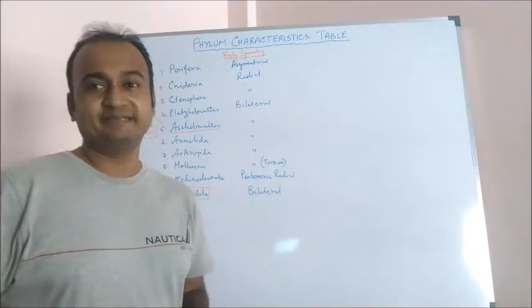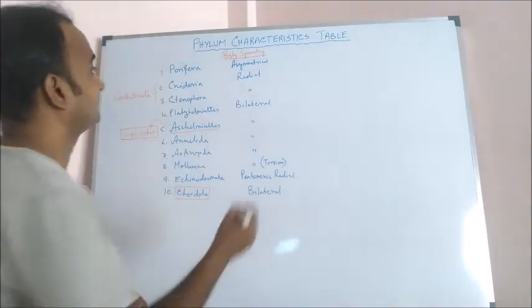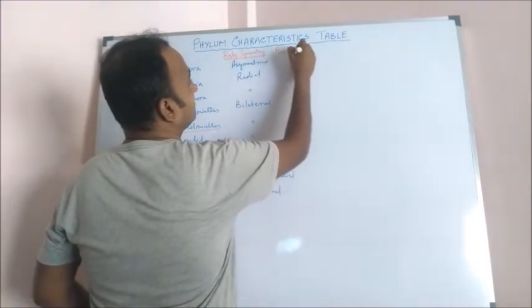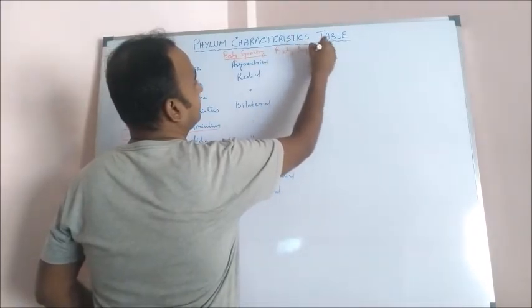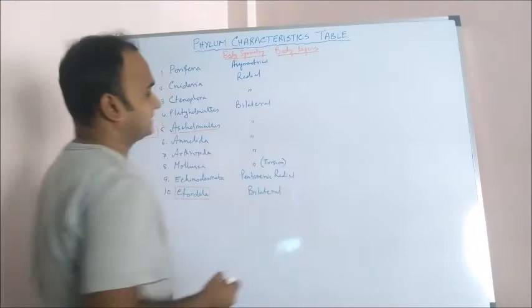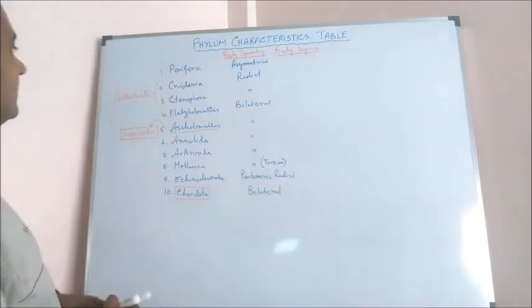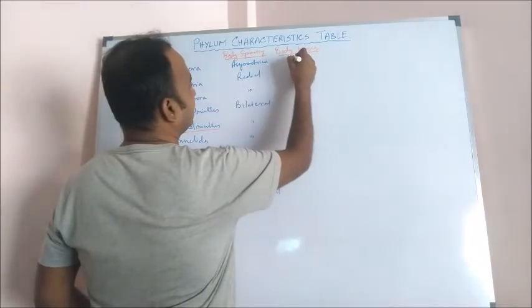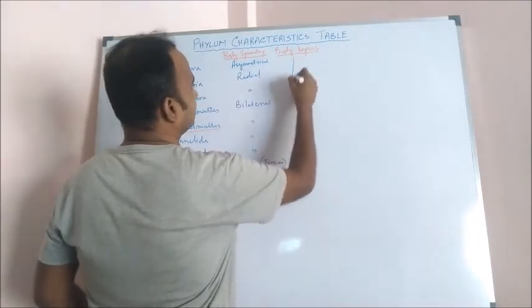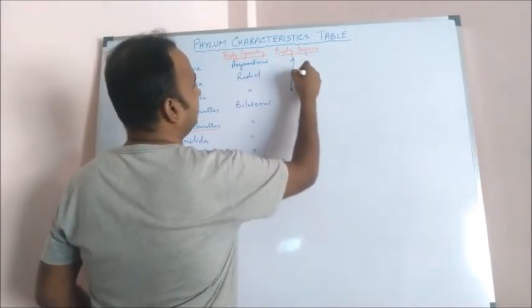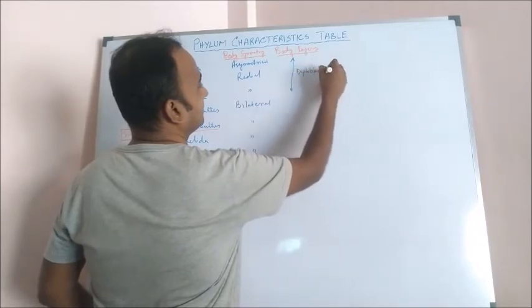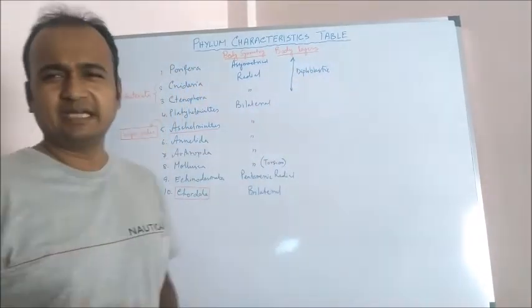Next general characteristics: body layers. Porifera, Cnidaria, and Ctenophora, first three diploblastic. Diploblastic, there are two body layers.